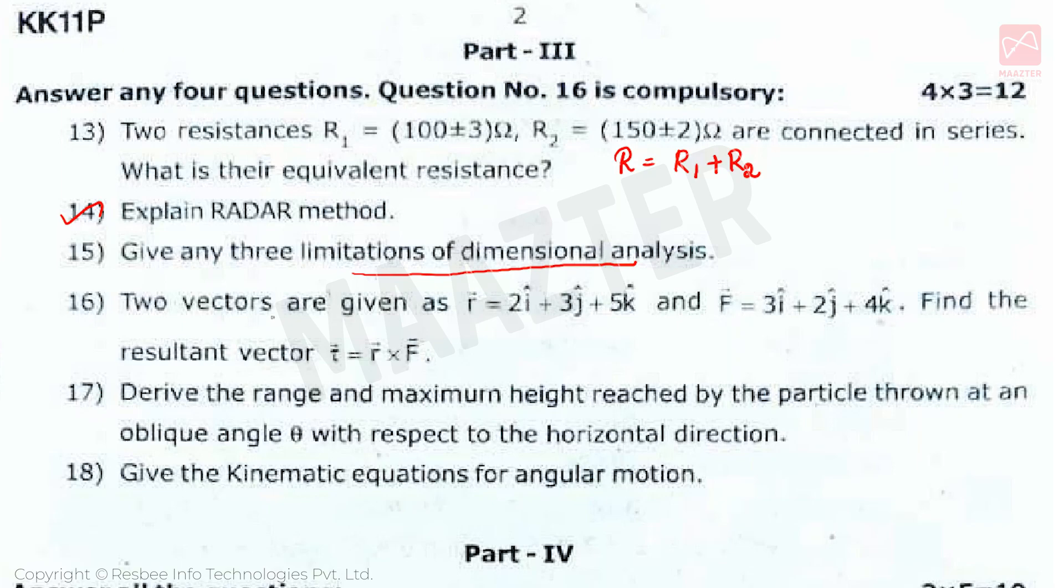Next question is: Two vectors are given as r vector = 2i cap + 3j cap + 5k cap and F vector = 3i cap + 2j cap + 4k cap. Find the resultant vector τ vector = r vector cross F vector. Substitute the given values of r vector and F vector to get the answer.